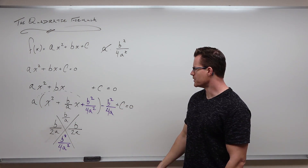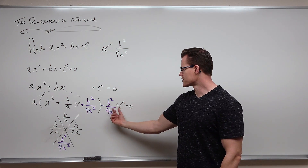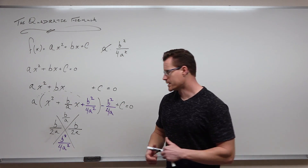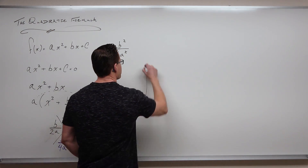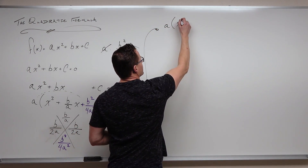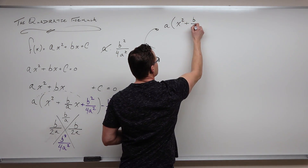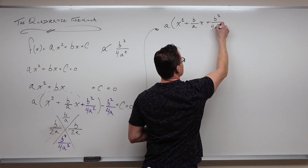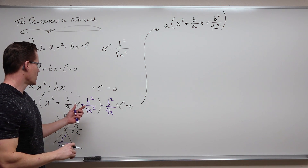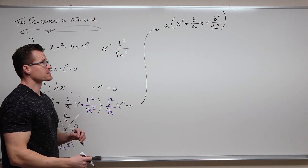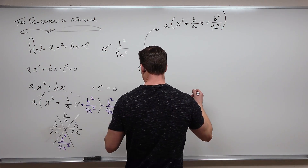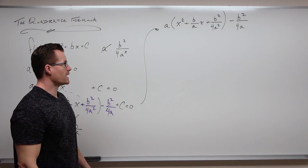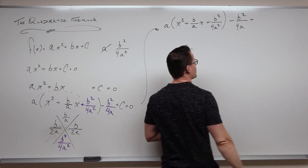We've got a couple more things to do. First, we're going to combine our like terms — these are all constants, while all our x-terms are still here. In order to combine them, we need a common denominator. So we've got a, x², (b/a)x, and b²/4a², which we know exactly what that's going to factor as: (x + b/2a)(x + b/2a). Then minus b²/4a plus c.